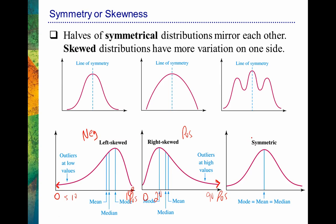The beautiful thing about a symmetrical distribution — a normal distribution — is that right in the middle, the mode, mean, and median are all exactly the same. When we have a symmetrical distribution, all three measures of central tendency will always be exactly equal. So it's important to understand how the different measures react when we have a skew versus a symmetric distribution.